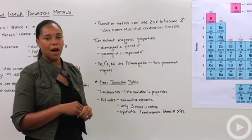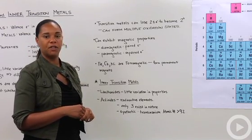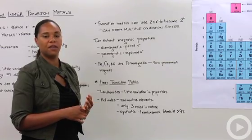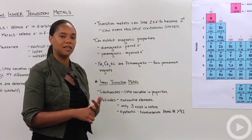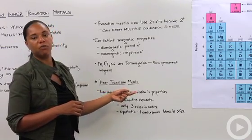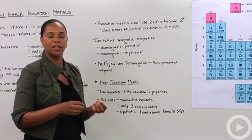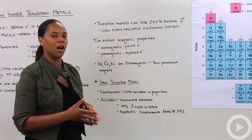So just a little bit then about the inner transition metals, which are the guys located at the bottom that have the two periods, period six, the lanthanide series, and period seven, the actinide series. So with the lanthanides, there's little variation in properties, and in nature, they're kind of all mixed together, and so they're difficult to separate. So we don't talk about them very much.